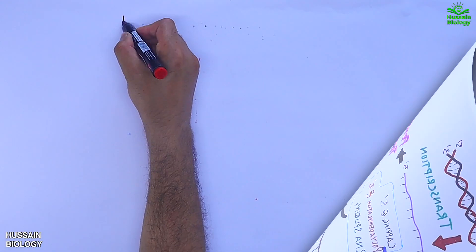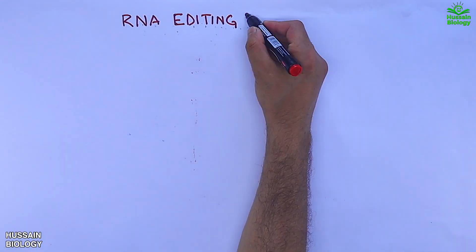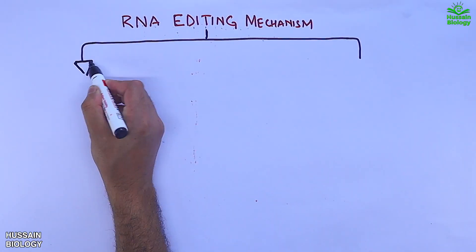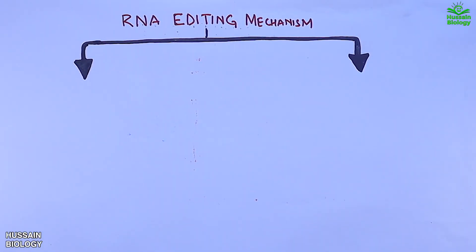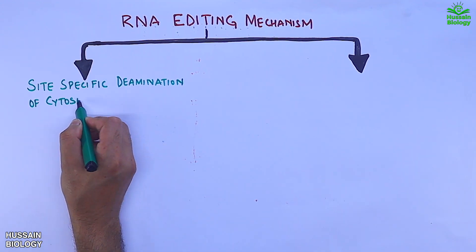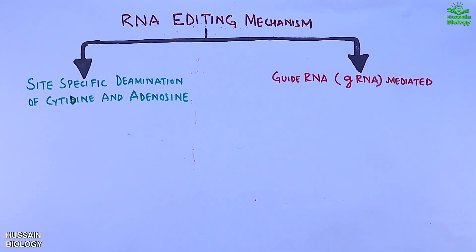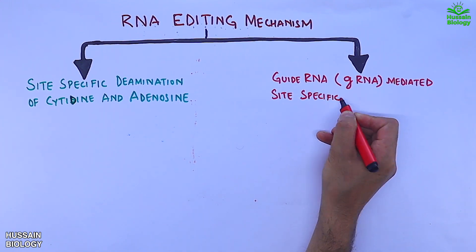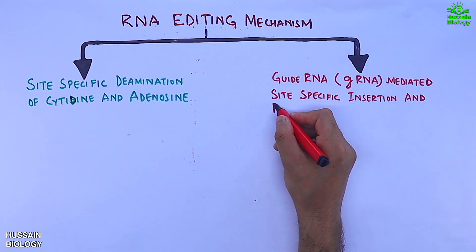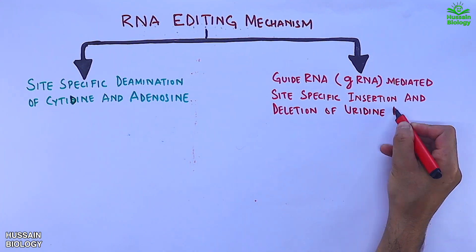Now let's move on to RNA editing mechanisms. There are two important mechanisms: site-specific deamination of cytidine and adenosine, and guide RNA-mediated site-specific insertion and deletion of uridine bases.